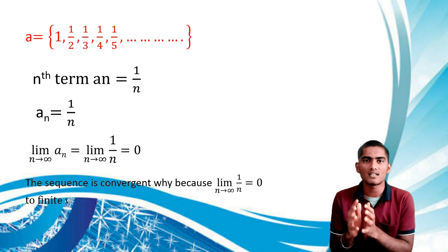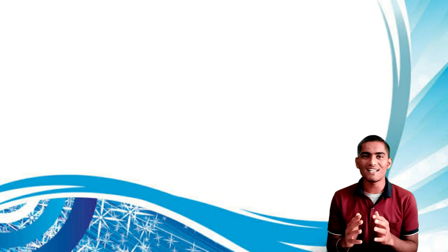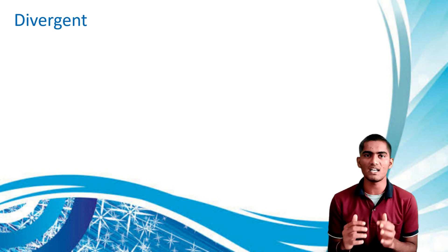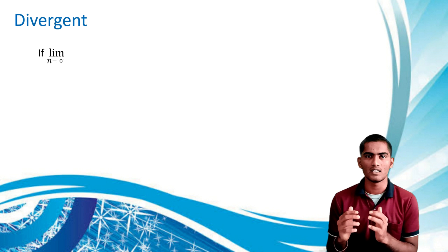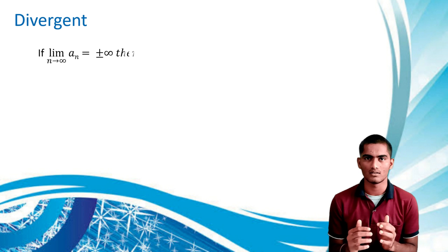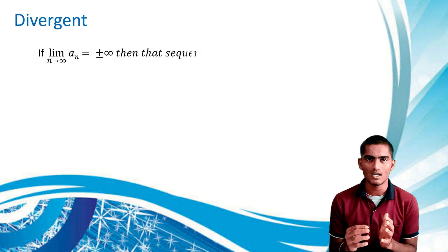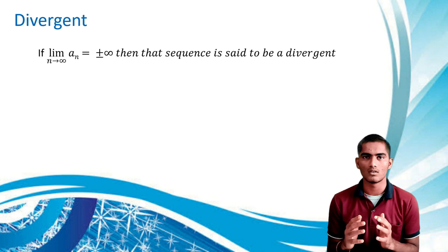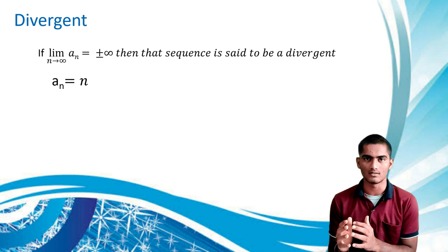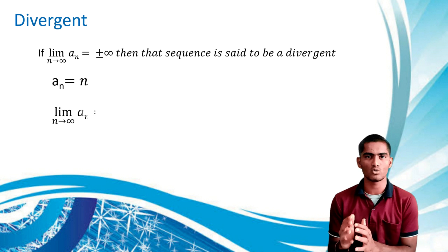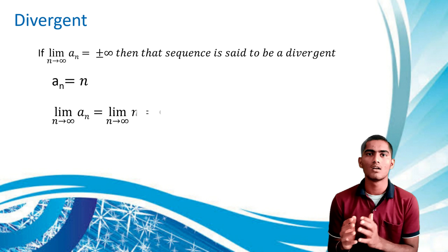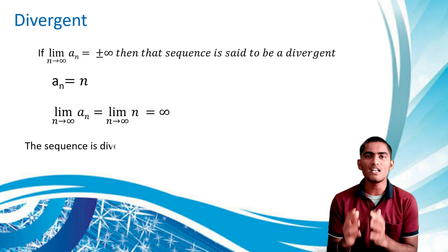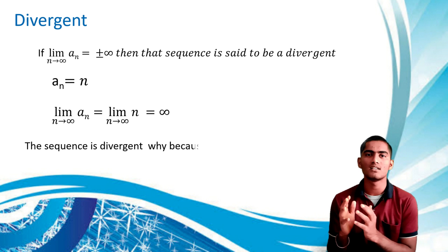Next is divergent. If the limit as n tends to infinity of a_n equals plus or minus infinity, then the sequence is divergent. For example, if the nth term of a sequence is n, then the limit as n tends to infinity of n equals infinity. Therefore this sequence is divergent.